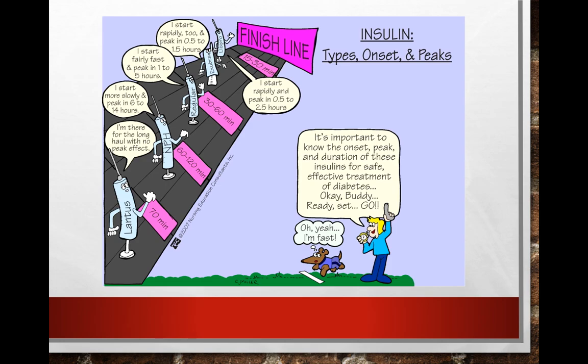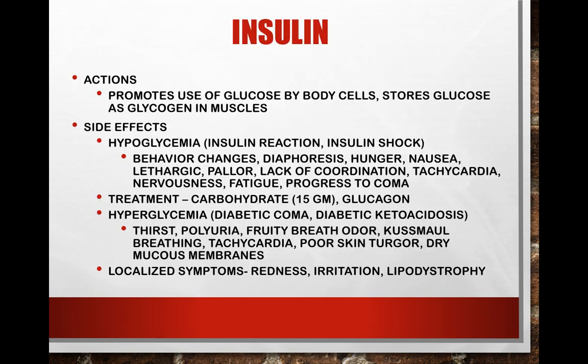This slide shows the different types of insulin and basically who gets to the finish line quickest based on their peak and duration. It's important to understand onset, peak, and duration in order to properly manage the patient's diabetes. The actions of insulin are to promote the use of glucose by body cells and to store glucose as glycogen in the muscles. The side effect is that insulin can act too dramatically and cause hypoglycemia — an insulin reaction — and put a person into insulin shock. We will see behavior changes, diaphoresis, hunger, nausea, and lethargy.